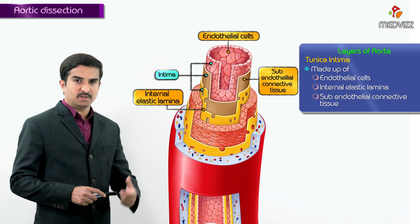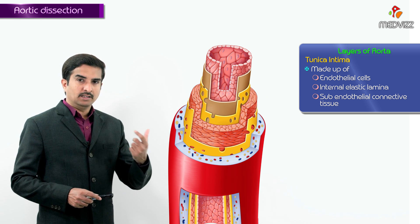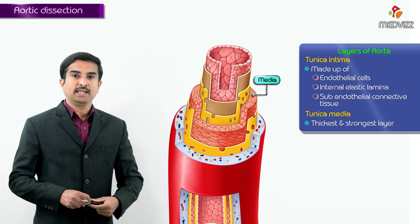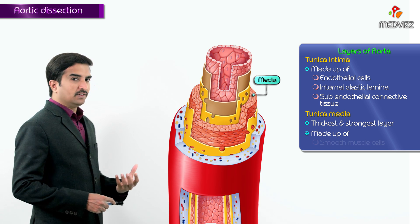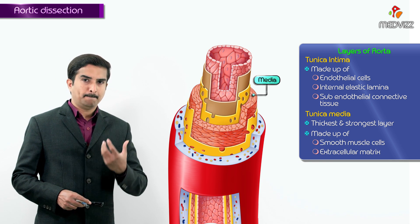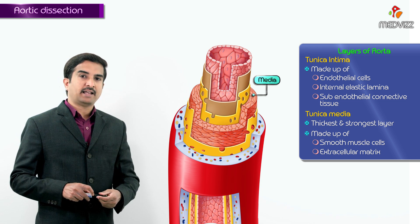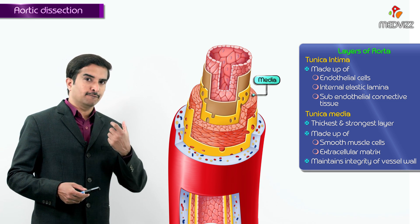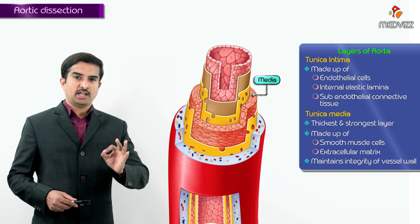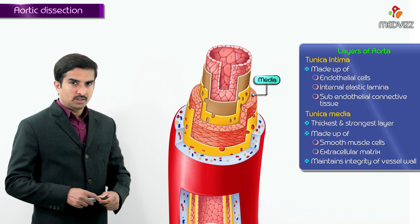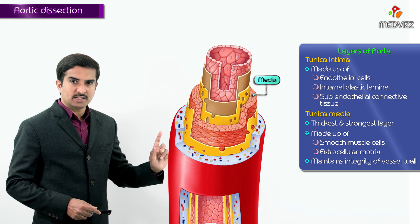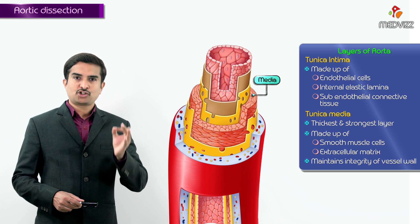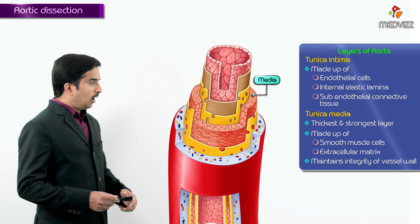After the intima, the next and most important, thickest, and strongest layer of the aorta is the media. The media is mainly made up of smooth muscle cells as well as extracellular matrix. The presence of smooth muscle cells and extracellular matrix in the media actually maintains the integrity of the wall of the vessel. So it is not adventitia nor intima — it is the media that maintains vessel wall integrity.